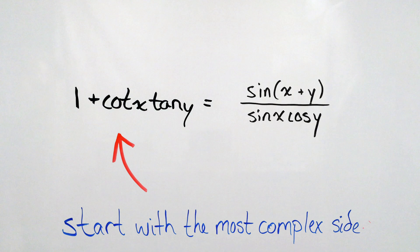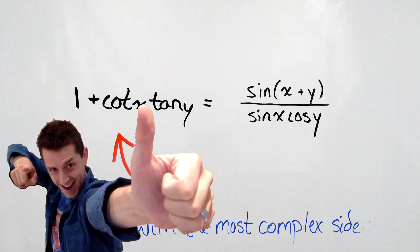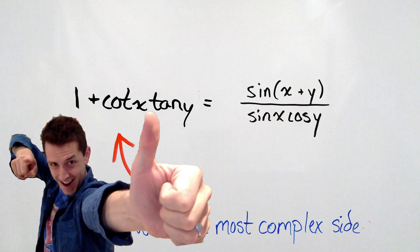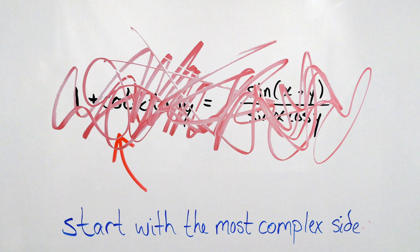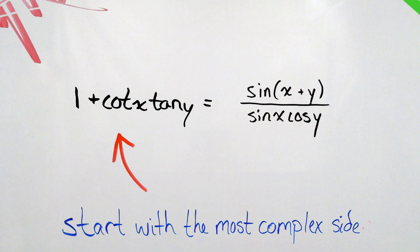The left side of this problem is decently complex. We have cotangent x and tan y, and we also have addition. Usually with identity problems, I like to start on the side with addition, because if there's addition and eventually fractions involved, things tend to get messy. But messiness is good in trig identity problems.